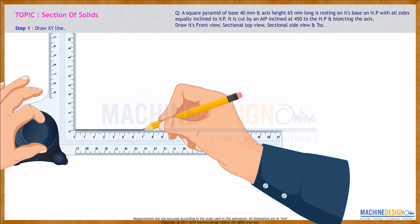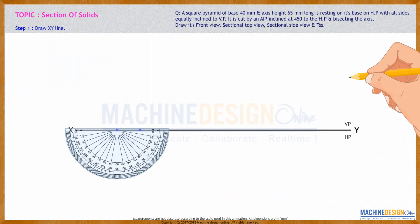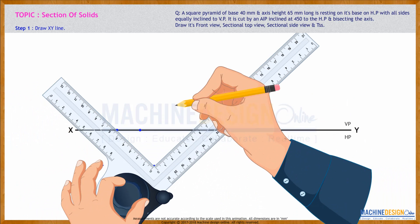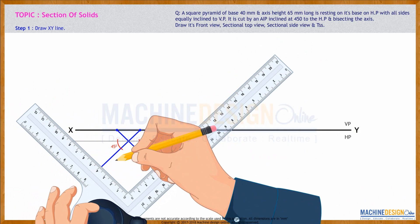We'll draw XY line. See, all sides are equally inclined to VP, so that means the square is inclined at 45-45. So we'll take 45. This angle will be 45, this angle will be 45, and we'll draw the square.